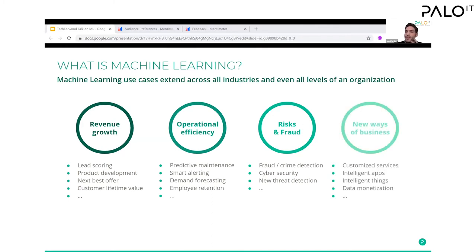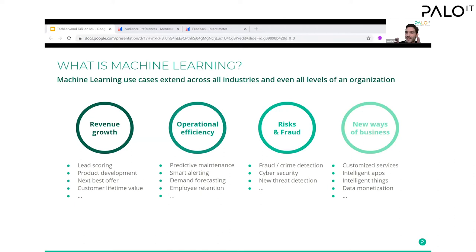Finally, machine learning can help envision new ways of doing business. If we think about getting to a market of one — a customer segment comprising of just one person — we can find ways to customize services, present data tailored for a certain individual, provide recommendations, and deliver meaningful insights specific to individuals. All of these help us treat customers with greater personalization, and we are really only limited by our own creativity in how machine learning can be applied.